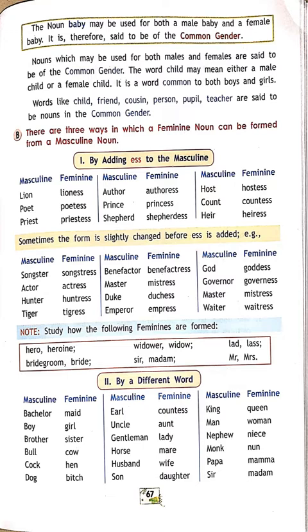Words like child, friend, cousin, person, pupil, teacher are said to be nouns of the common gender. Remember there are four kinds of gender: first is masculine, second is feminine, third is neuter, fourth is common. Masculine means male nouns, feminine means female nouns, neuter means non-living things, and common gender means either male or female.